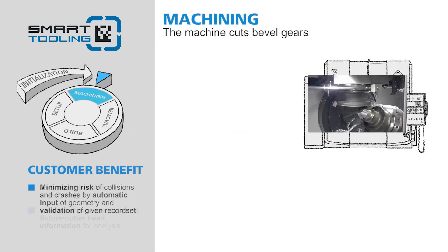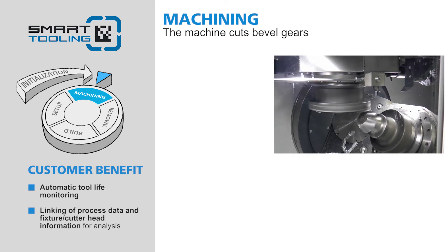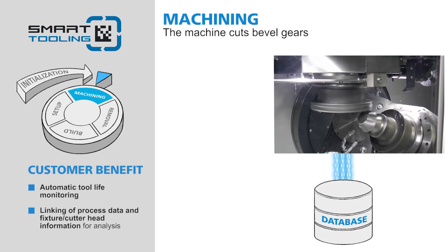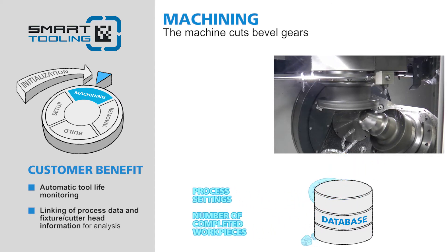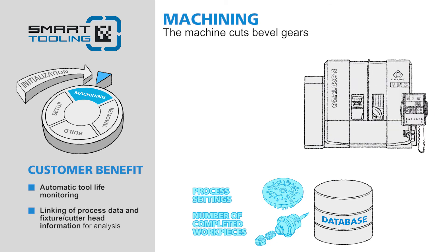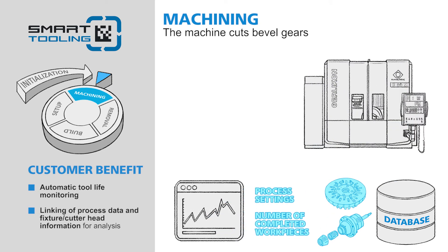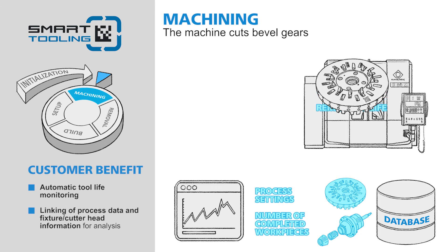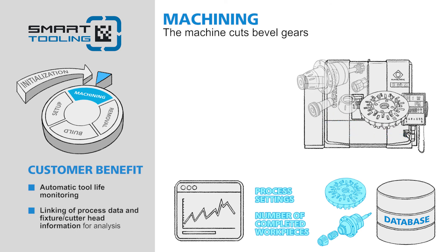Machining. The machine cuts bevel gears. When cutting takes place, the process settings and the number of completed work pieces are stored in the database and assigned to the digital twin. This provides a data basis for tool life analysis. At the same time, tools with remaining tool life can be effectively planned for subsequent manufacturing orders. The same process applies to wear parts in the fixture, such as expanders.